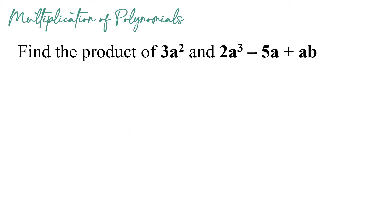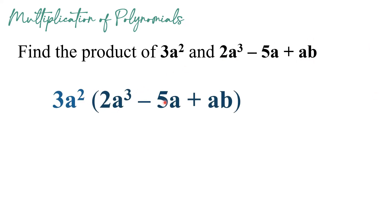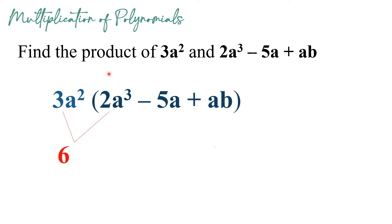Next example. Let us find the product of 3a squared and 2a cubed minus 5a plus ab. We have 3a squared times the quantity 2a cubed minus 5a plus ab. We multiply this monomial to each term inside the parentheses. Starting with the first term: multiplying 3a squared times 2a cubed, we start with the numerical coefficients 3 and 2, giving us positive 6. Since they share the same base, we add exponents: 2 plus 3 gives us 5. So we have 6a raised to 5.